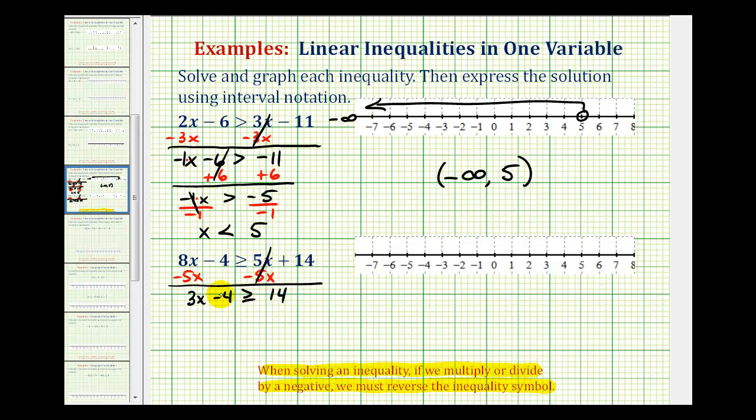And now we need to undo the subtraction and this multiplication, and we always undo the subtraction first. So we'll add 4 to both sides. So we'll have 3x, should be zero, greater than or equal to 18.